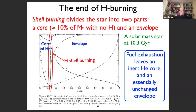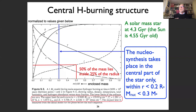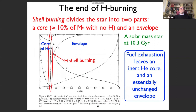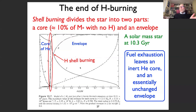Hydrogen burning continues until there is no hydrogen left. This is illustrated in the structure of a solar-mass star more than 10 giga-years old: there is no hydrogen left in the center, replaced by a core consisting essentially only of helium. Outside is the envelope, essentially unaffected, and there is a shell where hydrogen burning still continues. This divides the star into two parts — a core and an envelope — that develop differently as time goes on.